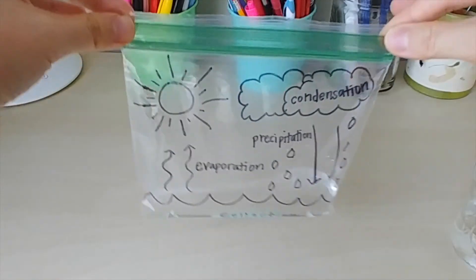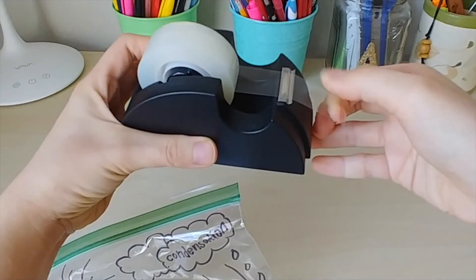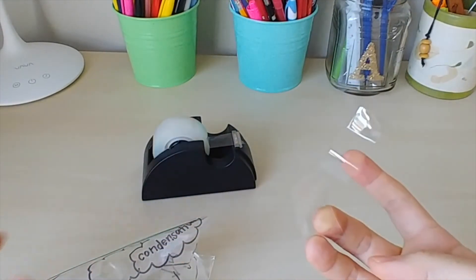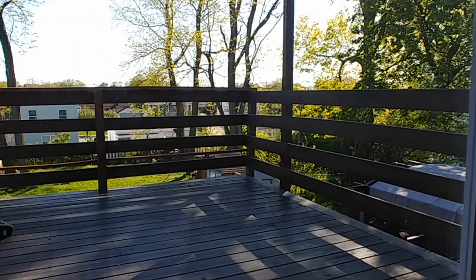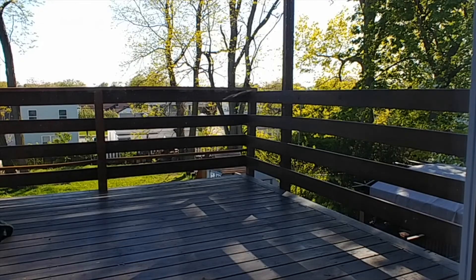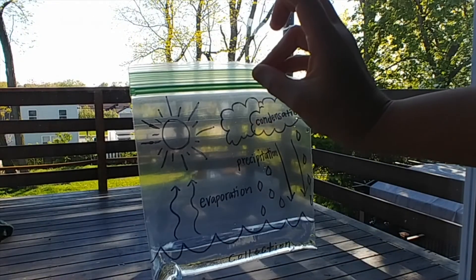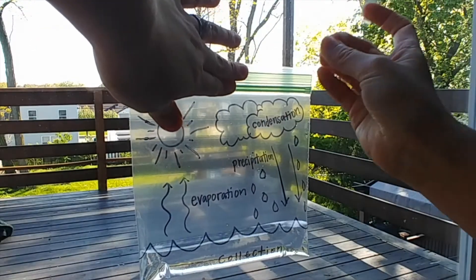Seal your bag tightly and then grab two pieces of tape, or more depending on how many you will need, and find a window in your home where you get a lot of sunlight throughout the day. And you're going to try your best to secure this bag on the window just like so.